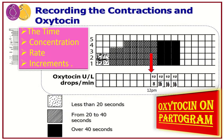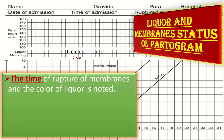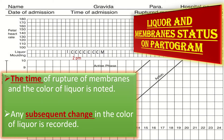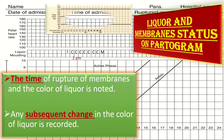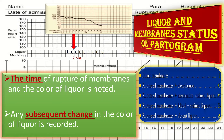Regarding liquor and membrane status on the partogram: the time of rupture of membranes and the colour of liquor is noted, and any subsequent change in colour is recorded. Important abbreviations used include: I for intact membranes, C for clear liquor, M for meconium, G1 to G3 for the grade of meconium, B for bloodstained liquor, and A for absent liquor.